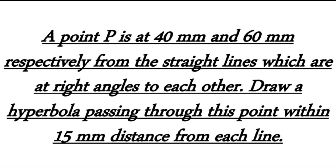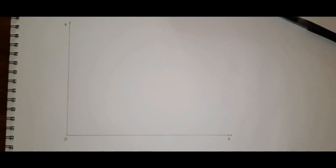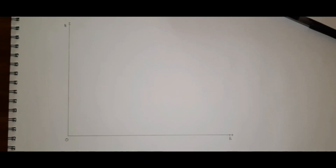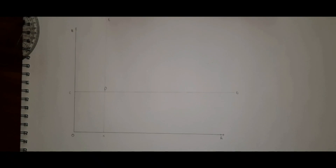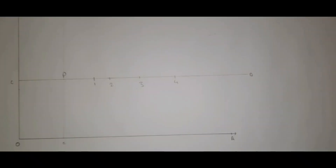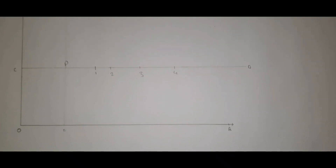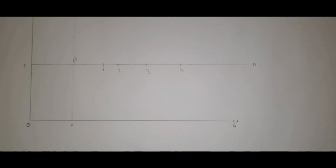The last question is: a point P is at 40mm and 60mm respectively from two straight lines at right angles to each other — draw a hyperbola passing through this point with 15mm distance from each line. First step: make lines OA and OB of any measurement perpendicular to each other. Mark point P at 60mm from OA and 40mm from OB. Through P draw line CD and EF parallel to OA and OB respectively. Take 4 points 1, 2, 3, 4 on PD — these do not need to be equidistant.